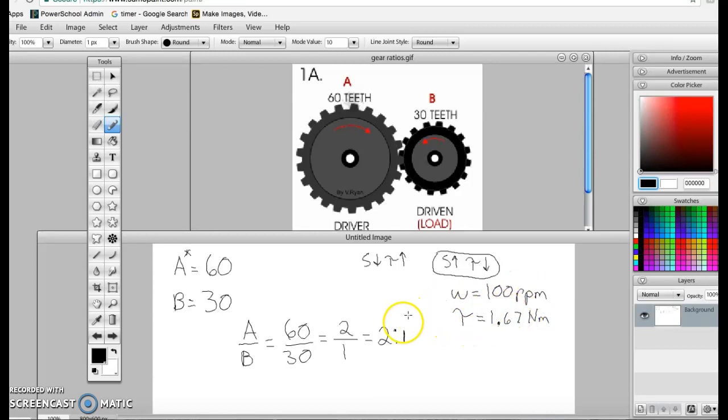Now all we have to do is just take the non-1 number of this gear ratio. What is the non-1 number in this gear ratio? It's 2.